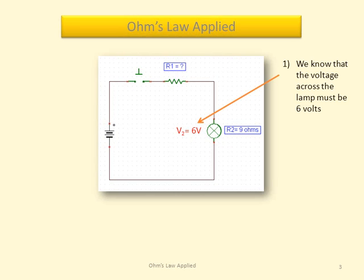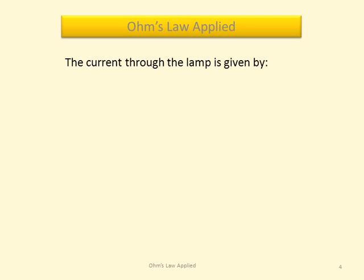We know that the voltage across the lamp must be 6 volts. This along with the resistance of the lamp gives us two quantities. The current through the lamp is given by I2 equals V2 divided by R2. We have 6 volts across a 9 ohm lamp, which gives us a current of 0.67 amps.